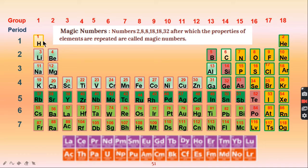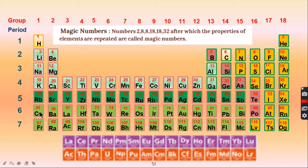Using group 1 as an example: hydrogen — add 2 to get lithium, add 8 to get sodium, add 8 to get potassium (atomic number 19), add 18 to get rubidium, add 18 to get cesium, then add 32 to get francium with atomic number 87. This rule can be applied to all elements.